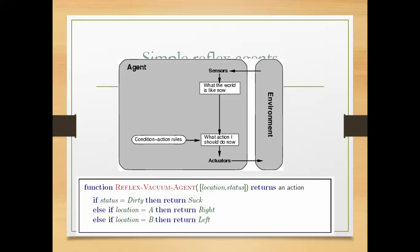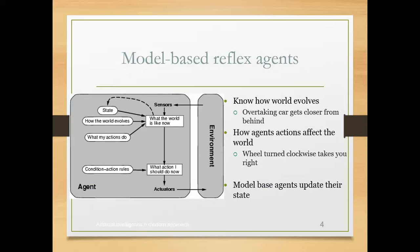The most important thing to observe here is that the simple reflex agent only knows what the environment is at present. It does not consider the past history of the environment. Based only on the present situation of the environment, it performs actions using conditional action rules. This is what we call simple reflex actions.